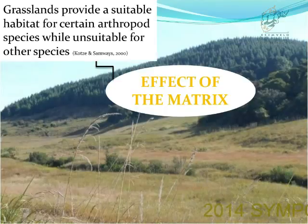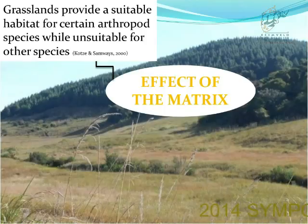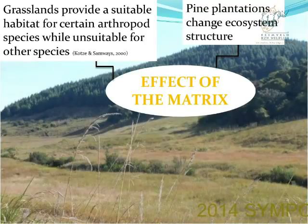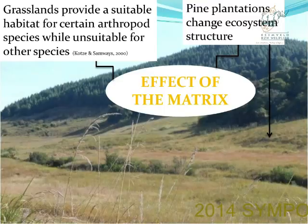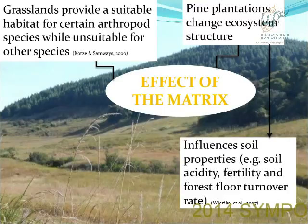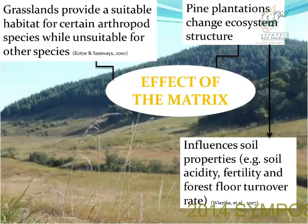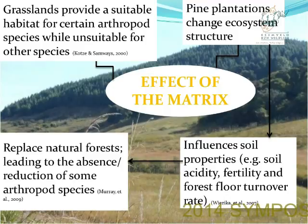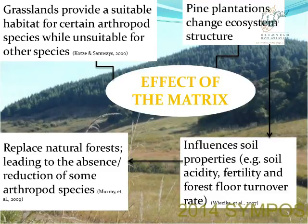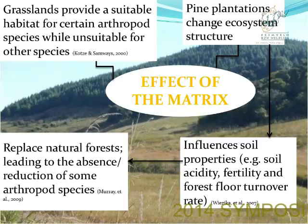Grassland has been found to provide a suitable habitat for certain arthropod species. Whereas pine plantation changes the ecosystem structure and influences soil properties such as soil acidity, fertility, and forest floor litter. Pine plantation also replaces natural forests, which leads to the complete absence or reduction of some arthropod species that are adapted only to survive in natural forests.